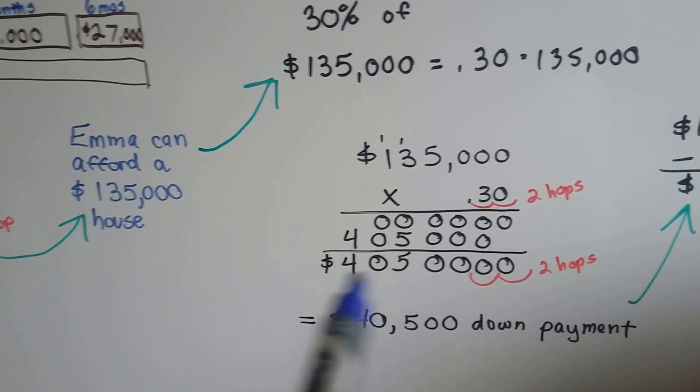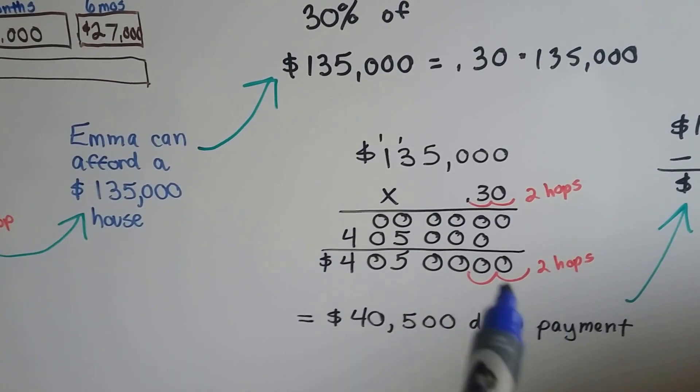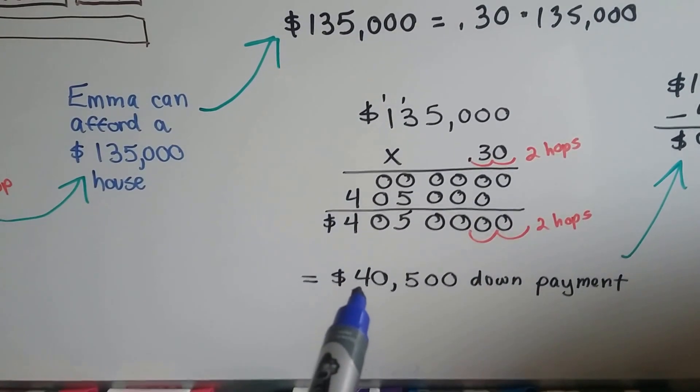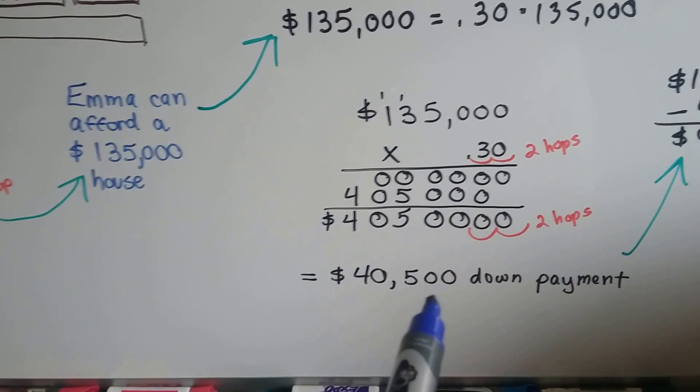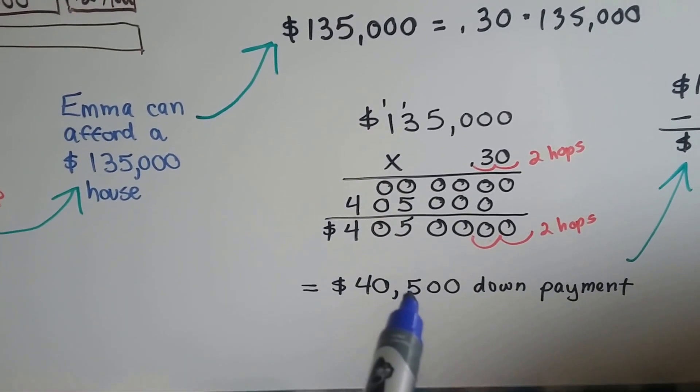We count the two hops here. We do all our multiplication, and we add it up, and we count our two hops here, and we find out that she needs to put down $40,500. That's how much she needs in her savings.